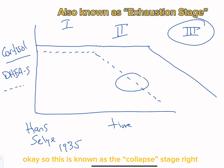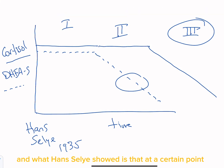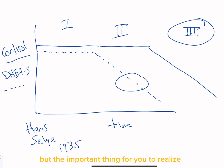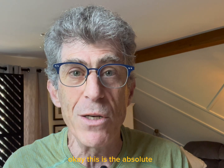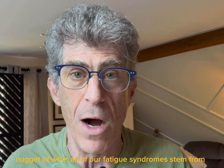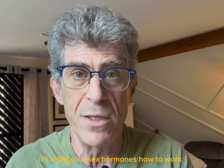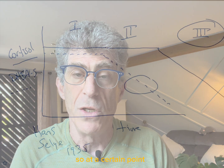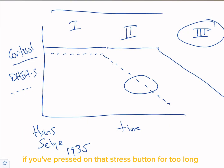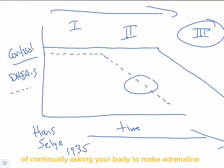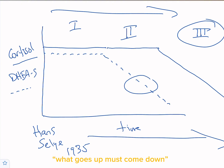This is known as the collapse stage. Hans Selye showed that at a certain point, the brain directs the adrenal glands to stop making cortisol and stop making DHEAS — representing a more advanced state of adrenal fatigue. This is the absolute nugget of what all our fatigue syndromes stem from, because cortisol is our master planner — the king of hormones. It tells our gut, sex hormones, skin, cardiovascular system, liver, and brain what to do. If you've pressed that stress button too long, what goes up must come down.